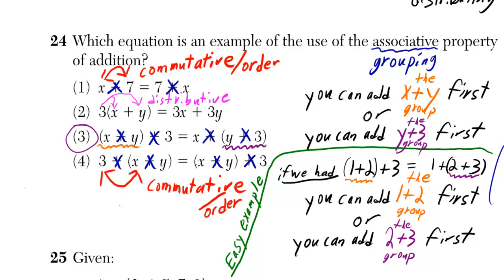So if they asked about that, it would be basically the exact same answer. If they asked for the use of the associative property of multiplication, then the answer of choice would still be number three.